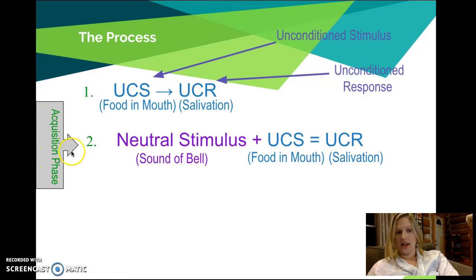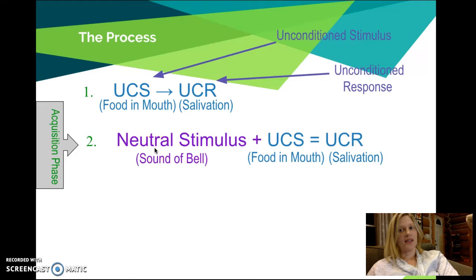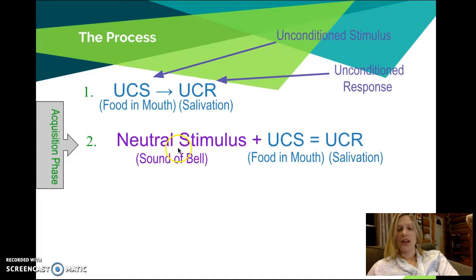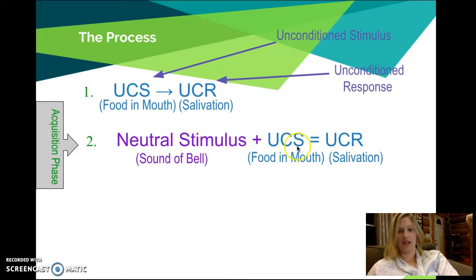During the acquisition phase, where learning is actually happening, you have to repeatedly pair some sort of neutral stimulus. We call it a neutral stimulus to start because if you just ring a bell without any training, a dog is not going to drool. You could test that during trials prior to conditioning — there should be no response. But Pavlov over and over again would ring the bell and then immediately present dogs with food, which produces the unconditioned response of salivation — the unlearned stimulus producing the unlearned response.